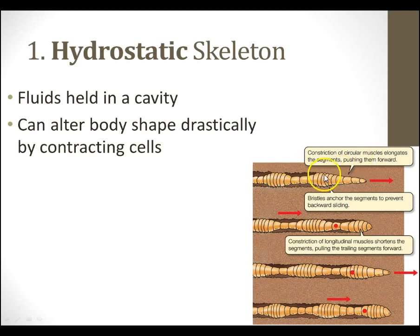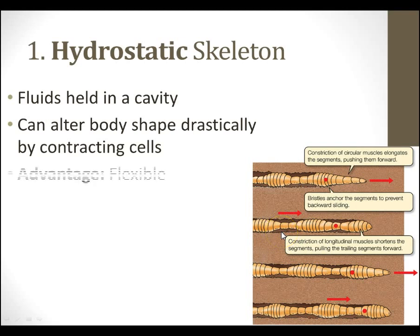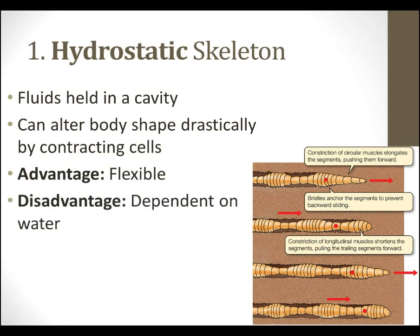By contracting circular muscles, it's going to push various segments forward, and then those little bristles called the setae are going to anchor the segments and prevent them from sliding backwards. Constriction of other muscles will pull up the back, and the cycle repeats itself. The advantage to a hydrostatic skeleton: they're flexible. They can get into just about any opening, and they never need to worry about essentially anything being broken.